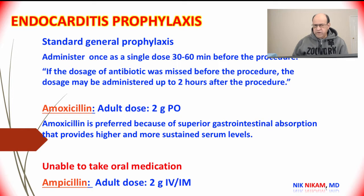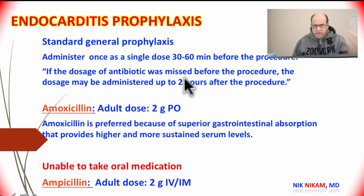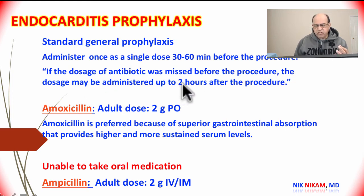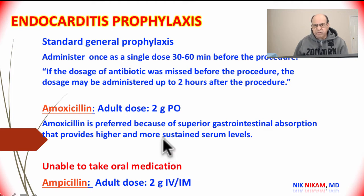Let's look at the standard medications and doses recommended by the American Medical Association, the American Dental Association, the American Heart Association, and the American College of Cardiology. All antibiotics should be administered as a single dose, preferably 30 to 60 minutes before the procedure. Even if you forget to give the antibiotics, they can still be effective as long as the dose is administered within the first two hours after the procedure. The standard recommendation is amoxicillin 2 grams by mouth 30 to 60 minutes before the procedure. If not able to take by mouth, we can use ampicillin 2 grams IV or intramuscularly 30 minutes before the procedure.